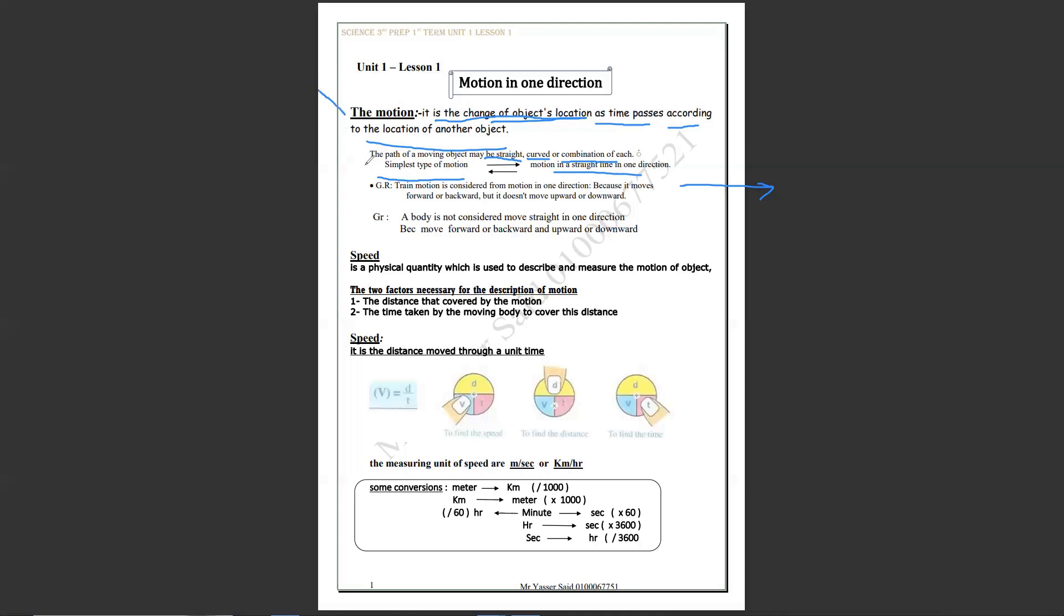First, motion. Second, the type of path of motion. Application for that. We applied what you understand. Train of motion is considered straight in one direction. That's right. Because it moves forward or backward only. Not both. Not upward or downward. If anything moves forward or backward and moves upward and downward, so this is not straight in one direction. This is for the other reason we can answer it. You guess this is the introduction for the lesson. Motion, type of path, and you will give reason. Very simple.